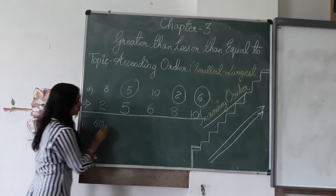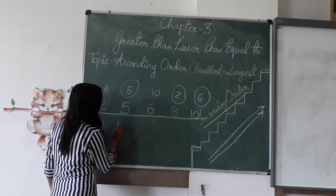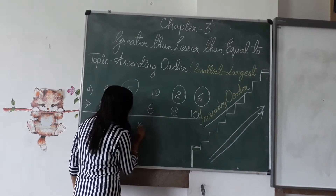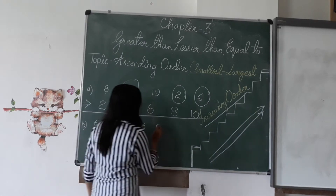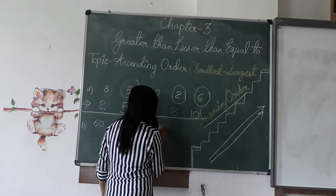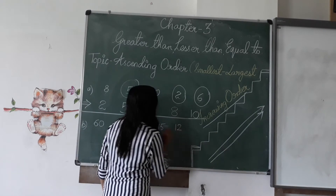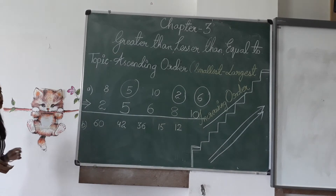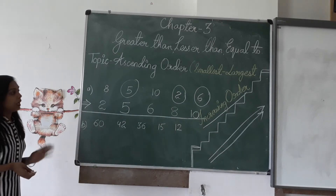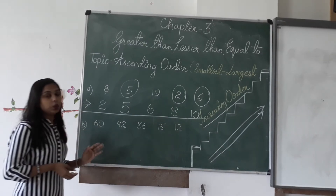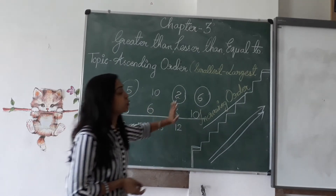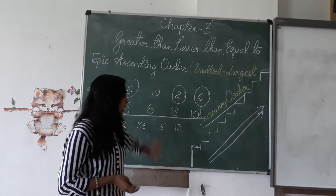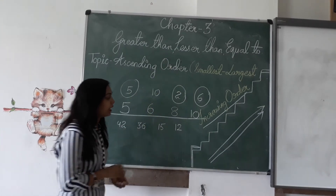Now let's look at another example with two-digit numbers: sixty, forty-two, fifty-six, fifty-three. Now let's arrange them in ascending order — chhote se bada, chhote se bada. We are going up.